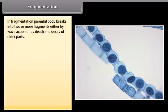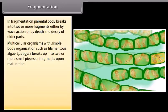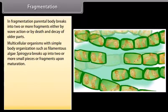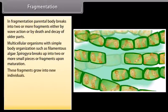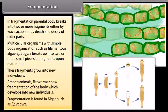In fragmentation, the parental body breaks into two or more fragments, either by way of action or by death or decay of older parts. Multicellular organisms with simple body organizations, such as the filamentous alga Spirogyra, break up into two or more small pieces upon maturation. These fragments grow into new individuals. Among animals, flatworms show fragmentation of the body, which develops into new individuals.